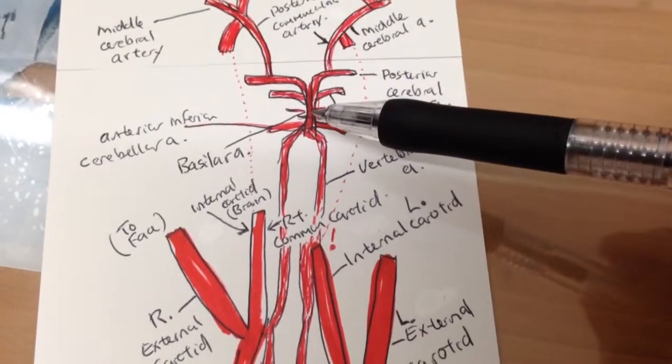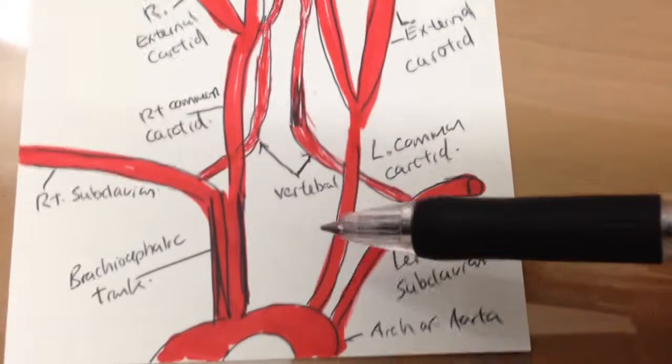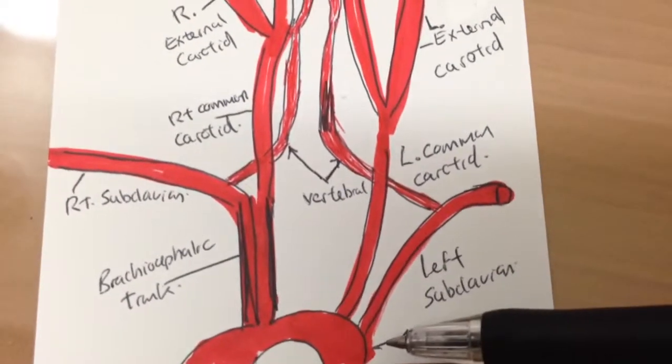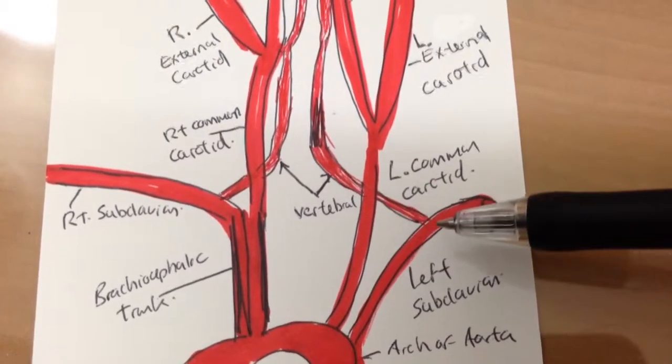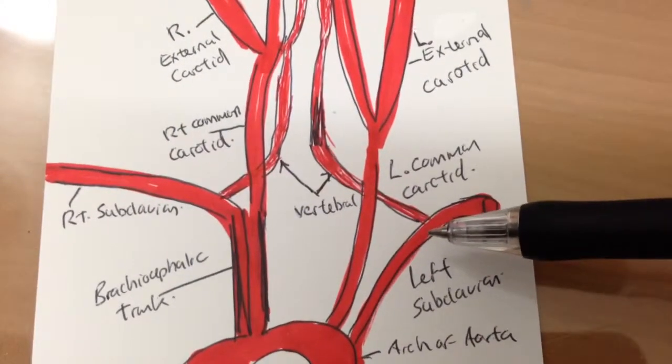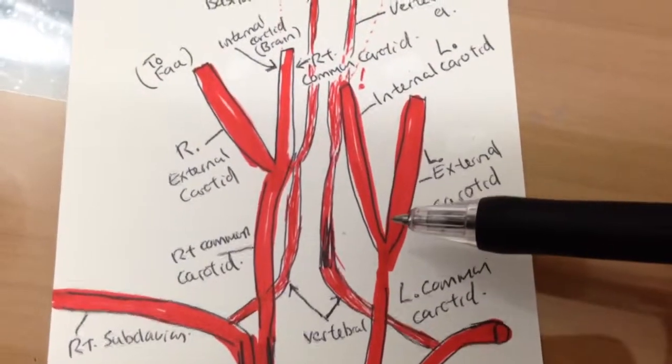They finally turn into the basilar artery and remember the basilar artery is not really part of the circle of Willis. Now we've seen the basics of what comes off the arch of the aorta.